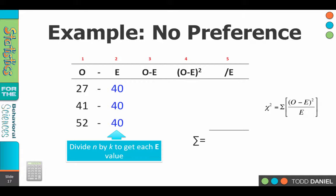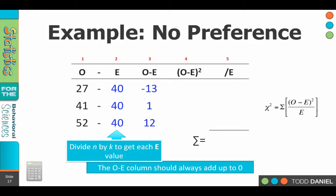27 minus 40 is negative 13. 41 minus 40 is 1 and 52 minus 40 is 12.